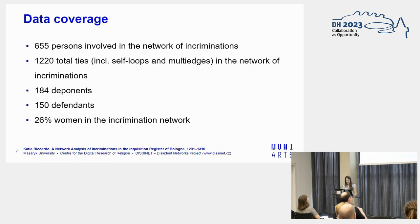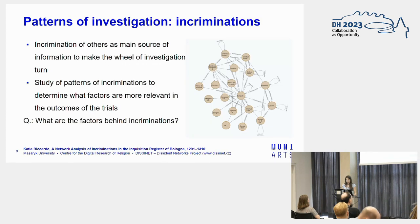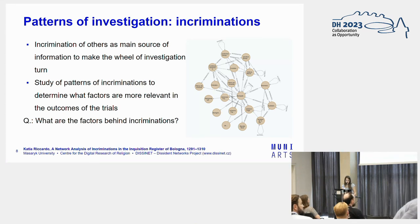Regarding the data coverage, we considered in the analysis every person involved as someone who incriminated or was incriminated. So we have 655 people forming over 1,000 ties. We have 184 opponents, but not all of them were tried — those were 150. We also noticed that women were underrepresented. How did investigations work? To have a lead to follow, the inquisitor had to gather more information about people. It could employ various methods to get people talking, but then there might have been reasons related to their social standing or kinship relations for people to collaborate or not with the inquisitorial authority.